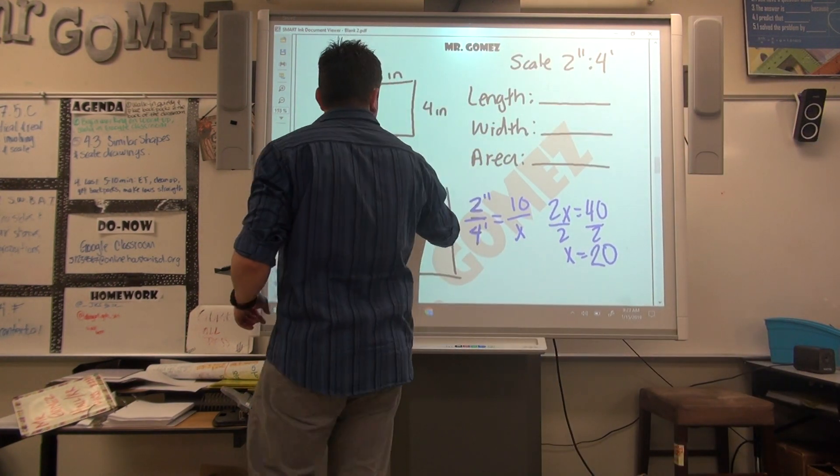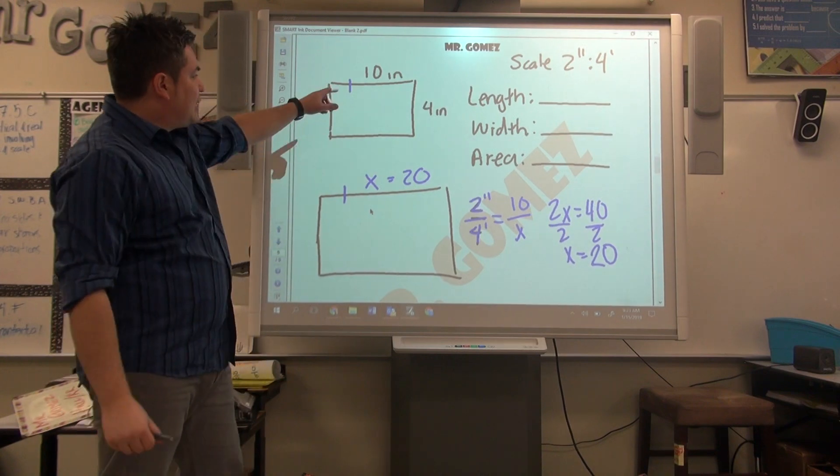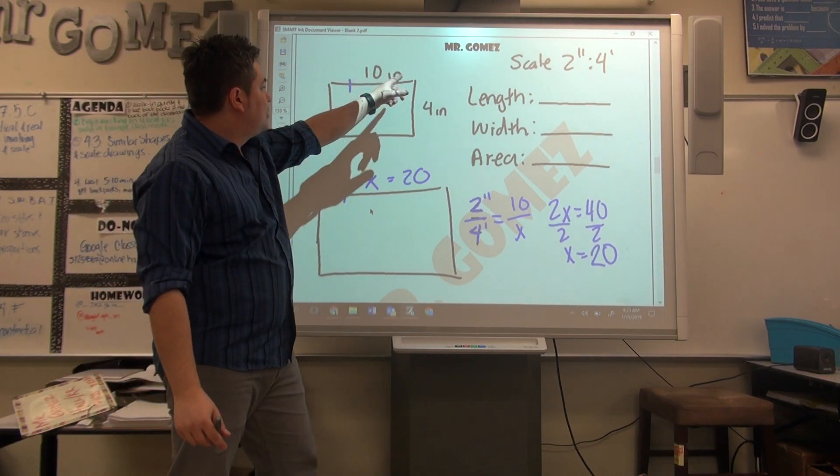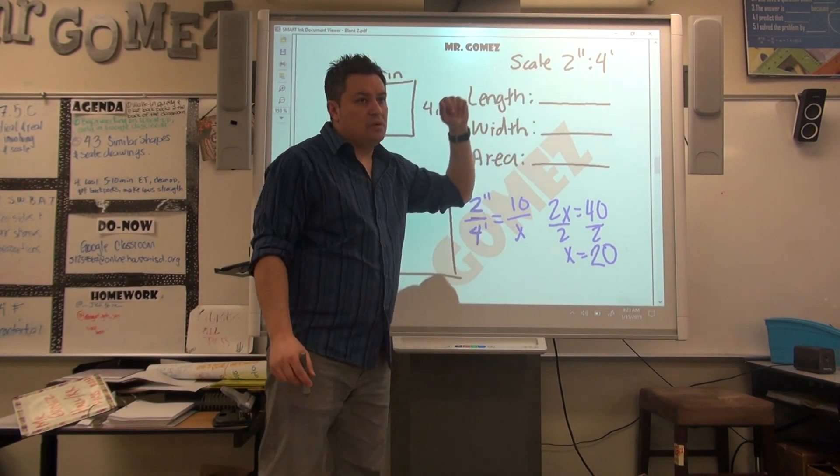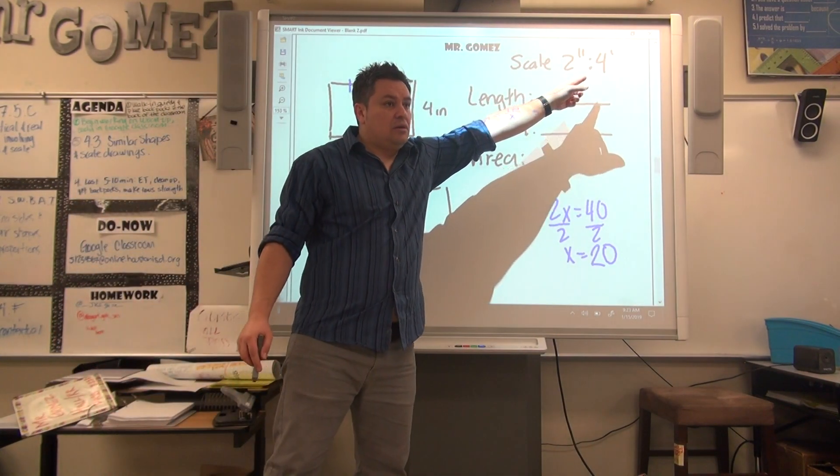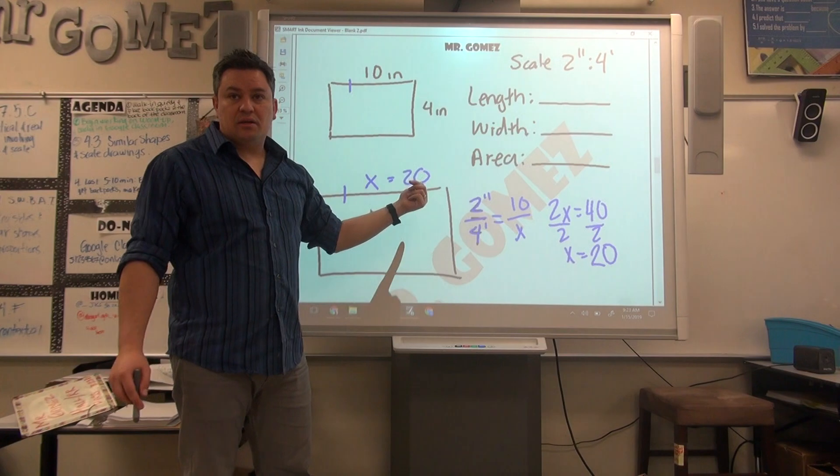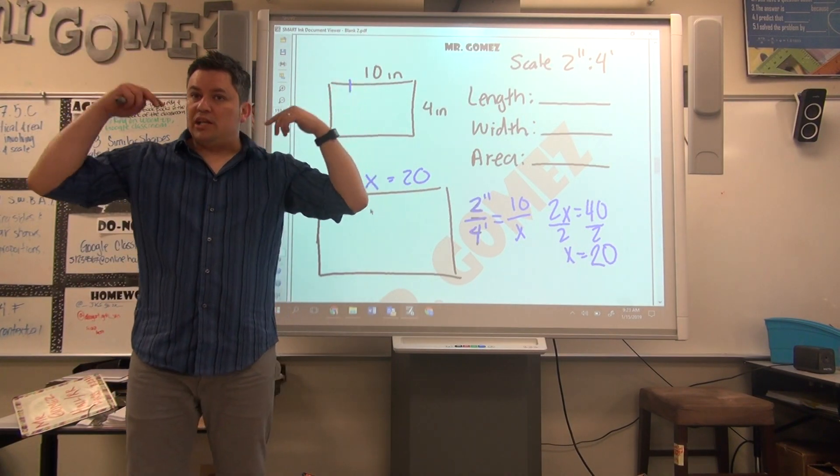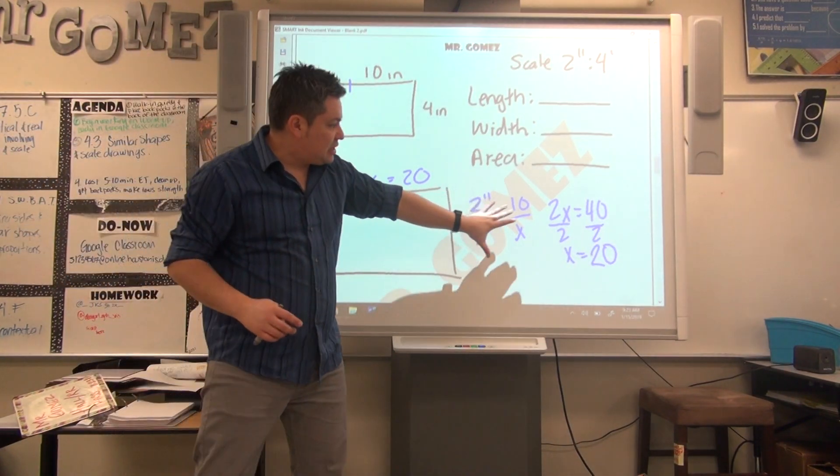It's going to make sense. Divide 10 by 2, what do you get? 5 times 4 is 20. Is this 20? Yes. You can probably do it in your head, but if you can't, this is how you do it.